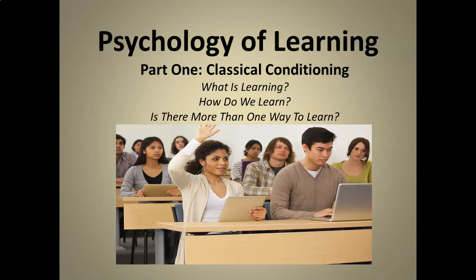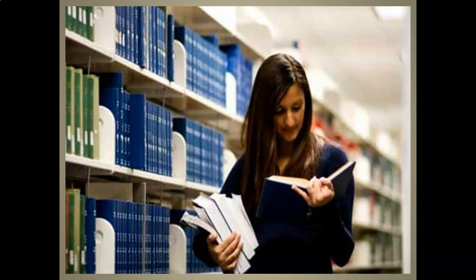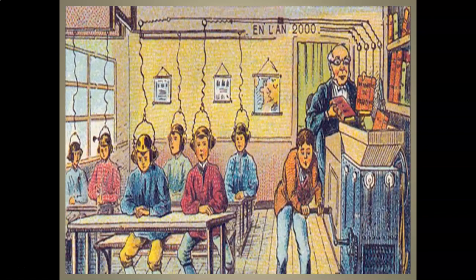In this module we're going to take a look at the psychology of human learning, and in this video specifically we're going to look at what is known as classical conditioning. Our goals are to answer the questions: what is learning, how do we learn, and is there more than one way to learn? More often than not when we think about learning we think of opening a book or sitting in a classroom, but learning actually happens in more ways than these.